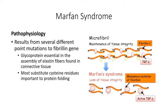It has also been shown that fibrillin has an effect in sequestering transforming growth factor beta (TGF-β). Loss of fibrillin has been shown to activate TGF-β, resulting in the release of proteases and an inflammatory response in the tissue. Although this is thought to have an effect in the pathophysiology of the disease, further work on the specific role that TGF-β plays still needs to be done.